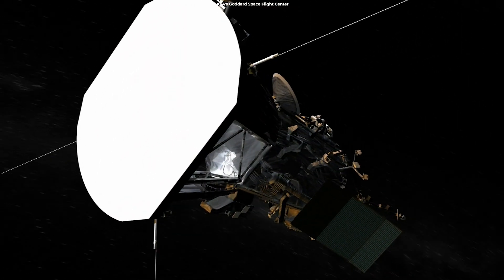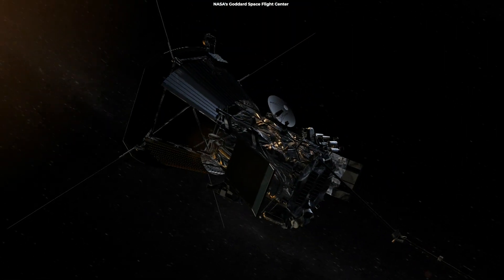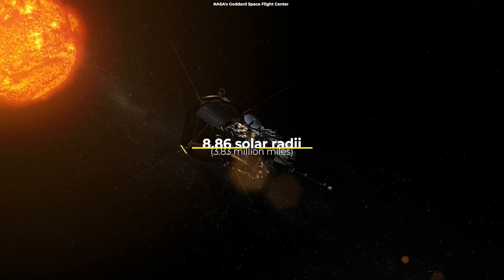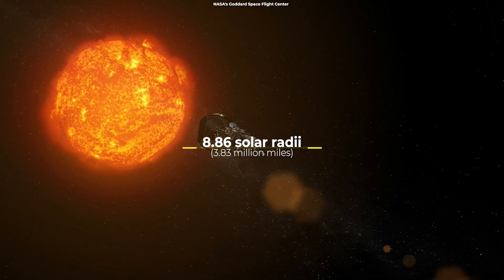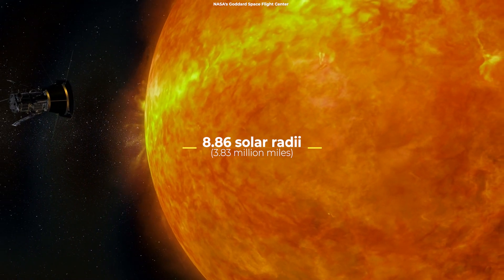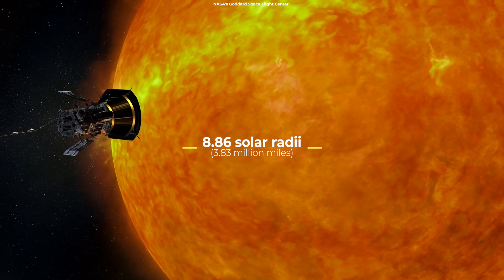Parker is expected to get considerably closer to the Sun in future flybys, coming as low as 8.86 solar radii, 3.83 million miles from the Sun's photosphere, its visible surface.